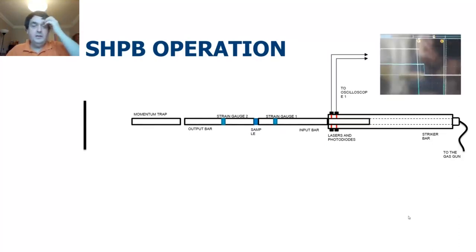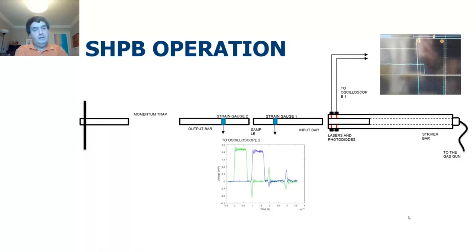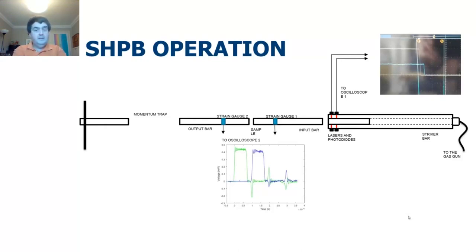Typical Hopkinson bar operation: you launch a striker, it's an input bar, you measure velocity as the bar crosses a couple of laser beams. You cause impact on the sample, which then breaks or damages, and you get a pulse reflected at the input bar and transmitted into the output bar. We used a momentum trap to take away the reflected energy so the sample was loaded only once. On the oscilloscope you can see the outputs from those gauges — reasonable energy transmitted and very little reflected.